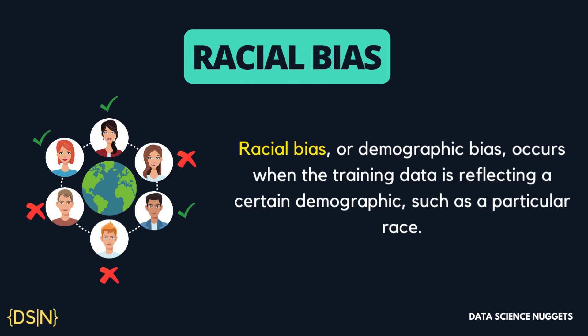Next is racial bias, also called demographic bias. This occurs when training data reflects a certain demographic, such as a particular race. When a model is trained on racially biased data, the outcome itself can be skewed. For example, if image data used for training self-driving cars mostly features Caucasian individuals, those cars will be more likely to recognize Caucasian pedestrians than darker-skinned pedestrians, resulting in reduced safety for darker-skinned individuals as the technology becomes more widespread. Other forms of demographic bias include class and gender bias, which affect training outcomes in similar ways.